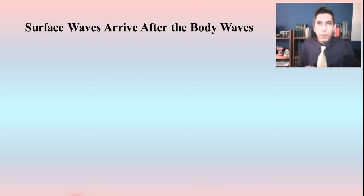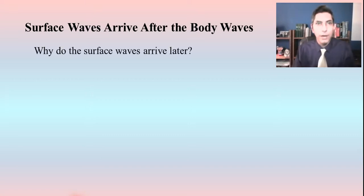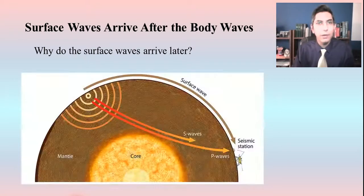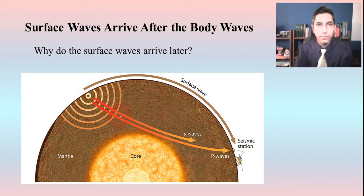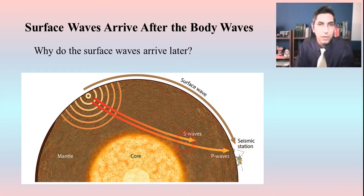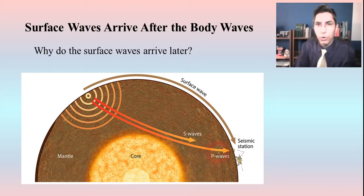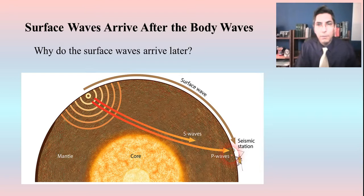So both P waves and S waves are body waves — you probably can't feel the P waves but you can probably feel the S waves. Surface waves arrive after the body waves because of the way they're transmitted. Body waves — S and P waves — travel directly through the earth. Imagine the seismograph might be 100 miles or so away — those body waves travel directly through the earth and can get to the seismograph much more quickly.